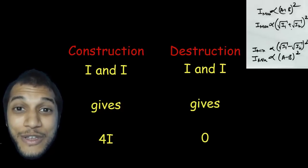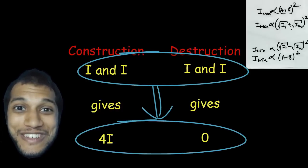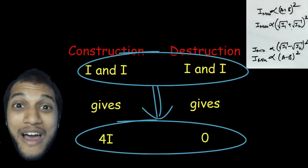Is the energy destroyed there? So when we have destruction, I plus I gives you zero. Right? So there is that missing 2I and that missing 2I has gone to the construction. And that's where we get the 4I from.